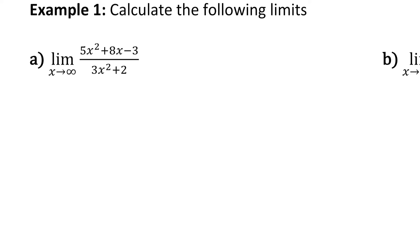In example 1a, we want the limit as x approaches infinity. If we tried direct substitution, you're just going to get infinity over infinity, which is nonsense. So we want to look at what is the highest power of x in the denominator — it's x squared. So we want to divide all of the terms in the numerator and denominator by x squared.